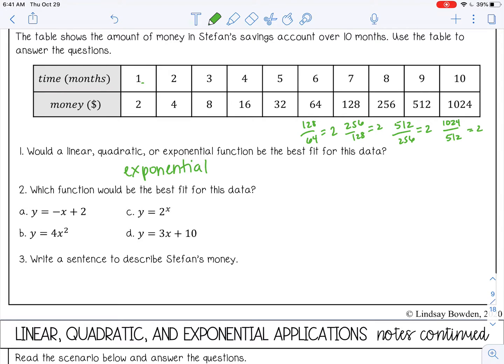Number two, which function would best fit the data? So we need to find an exponential function. So A is linear. That's out. B is quadratic. C is exponential. So that's a possibility. And then D is linear. So it's got to be C.